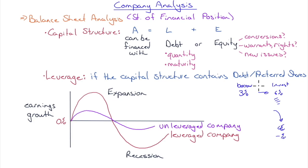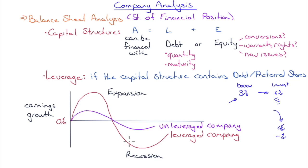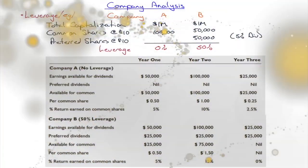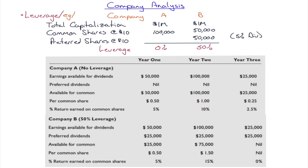Leverage amplifies earnings growth in expansions but causes severe contraction in recessions. A leveraged company sees earnings grow much faster than an unlevered one in good times — borrowing at low rates, investing at high rates — but in downturns, revenues fall while the fixed interest cost remains, causing earnings to take a big hit. A worked example with companies A and B illustrates this: Company A has $1M in equity only (100,000 shares at $10), zero leverage.